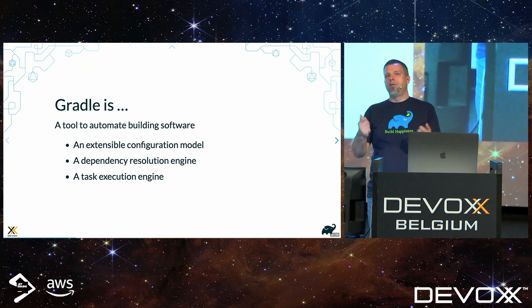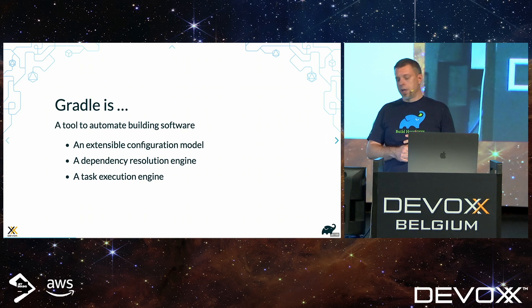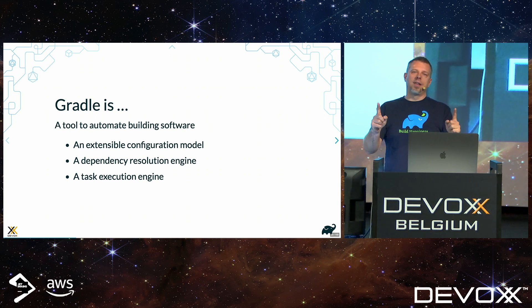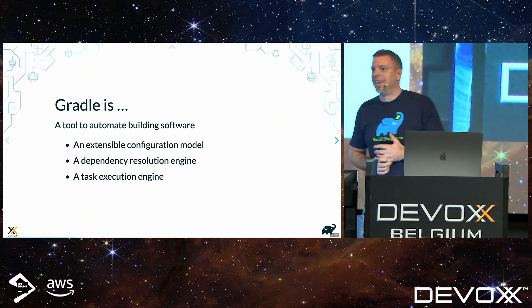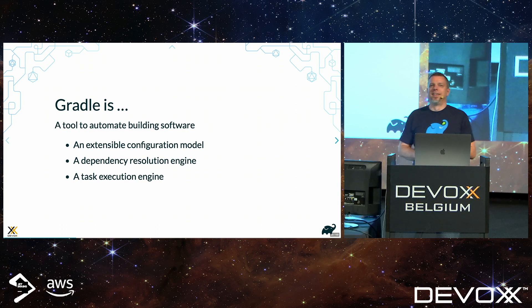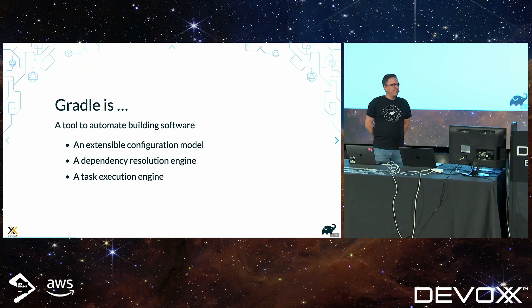So as a reminder, what we have in Gradle is a tool that automates building software with an extensible configuration model, a dependency resolution engine, and a task execution engine. That's our first chapter on what is Gradle. We'll try to have questions at the end of each chapter — we have a few t-shirts here, ask a question get a t-shirt after the talk. Any questions at this stage? Okay, shall we move on?